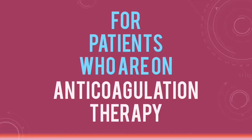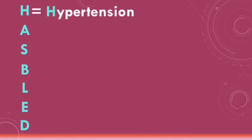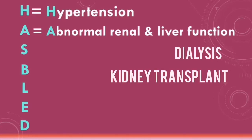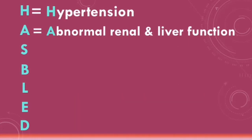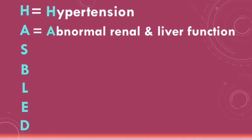For patients on anticoagulation therapy, another score is calculated: the HAS-BLED score, which evaluates bleeding risk. Each letter stands for a risk factor. H refers to uncontrolled hypertension. A refers to abnormal renal and liver function — abnormal renal function includes patients on dialysis, those with a kidney transplant, or raised serum creatinine; abnormal liver function includes cirrhosis. S refers to a history of stroke.